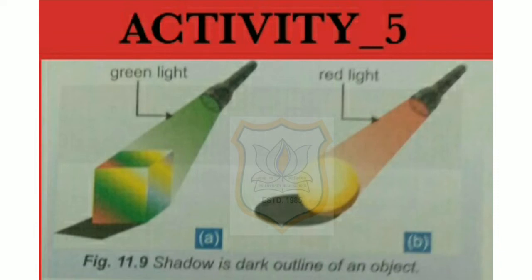Now cover the front part of the torch with dark red colored cellophane and shine the torch on a yellow ball. The shadow is again dark.